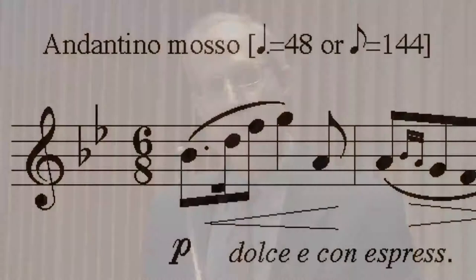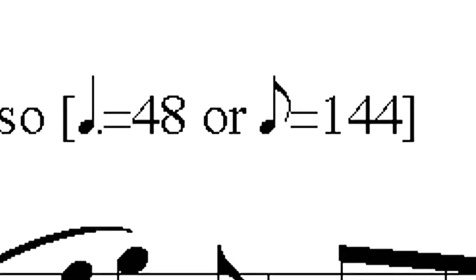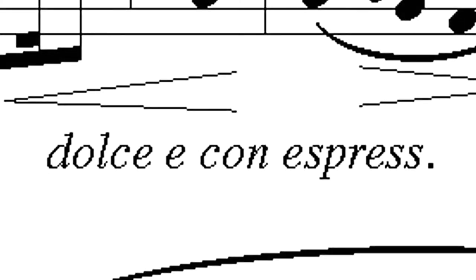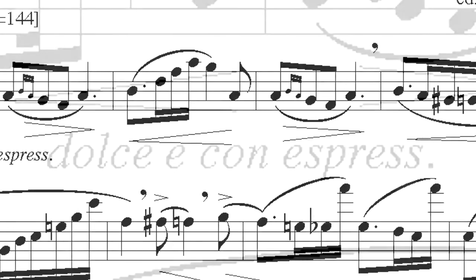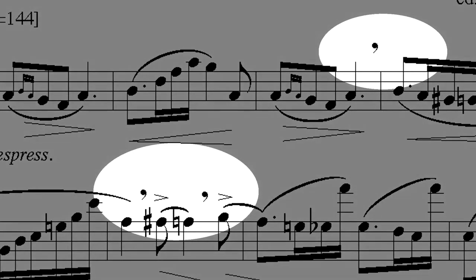The tempo marking of the piece, Andantino Mosso, is a little faster than Andante, which means walking. Practice at first in six eighth-note beats per measure until you can play at eighth equals 144, and then try at two beats to the bar at dotted quarter note equals 48, which is the same tempo. At the beginning of the piece it's marked dolce e con espressivo, which means sweetly and expressively. It is extremely important to coordinate breathing and phrasing. I have marked breathing spots in my edition, so please follow these markings and avoid breathing in random places.